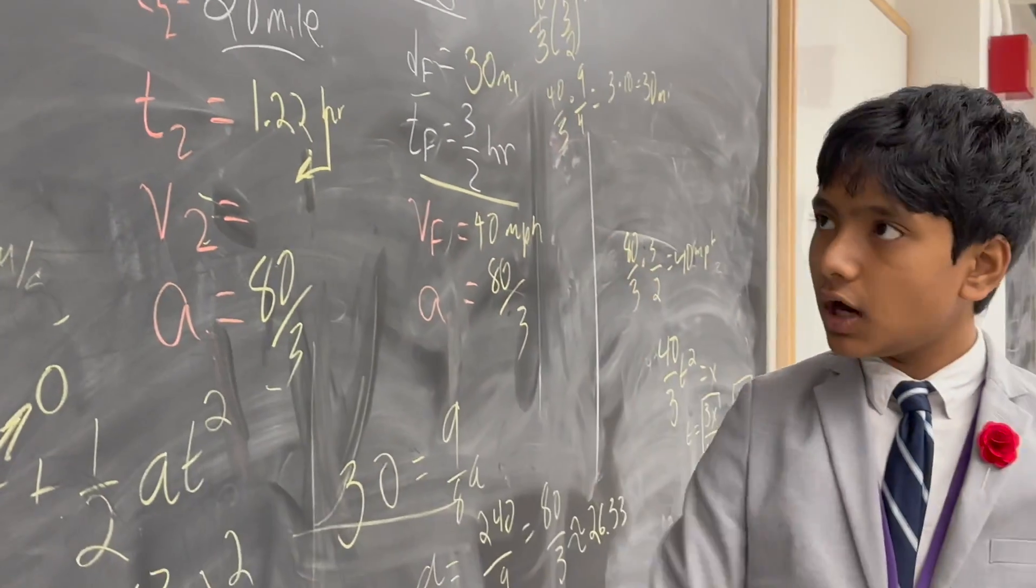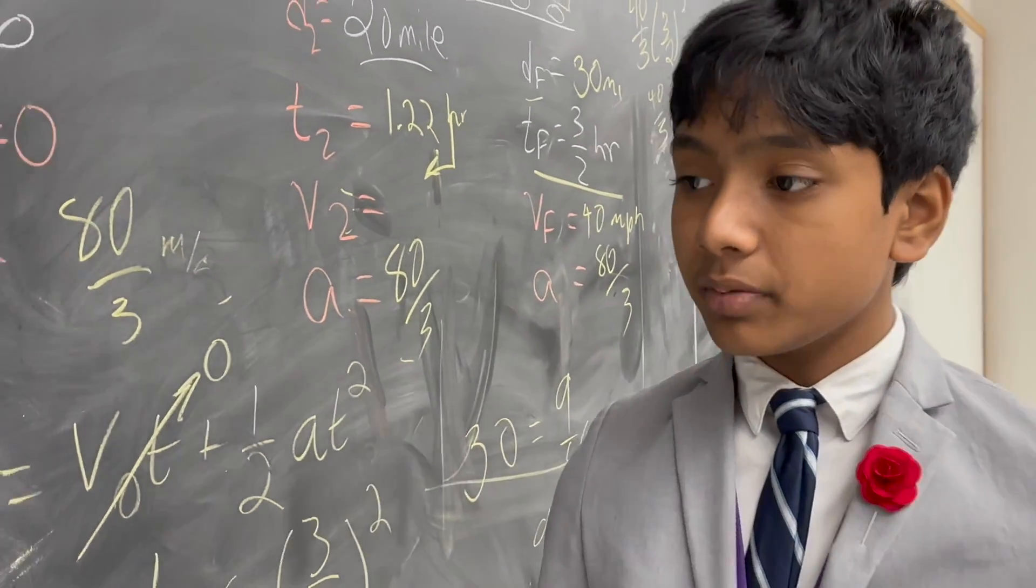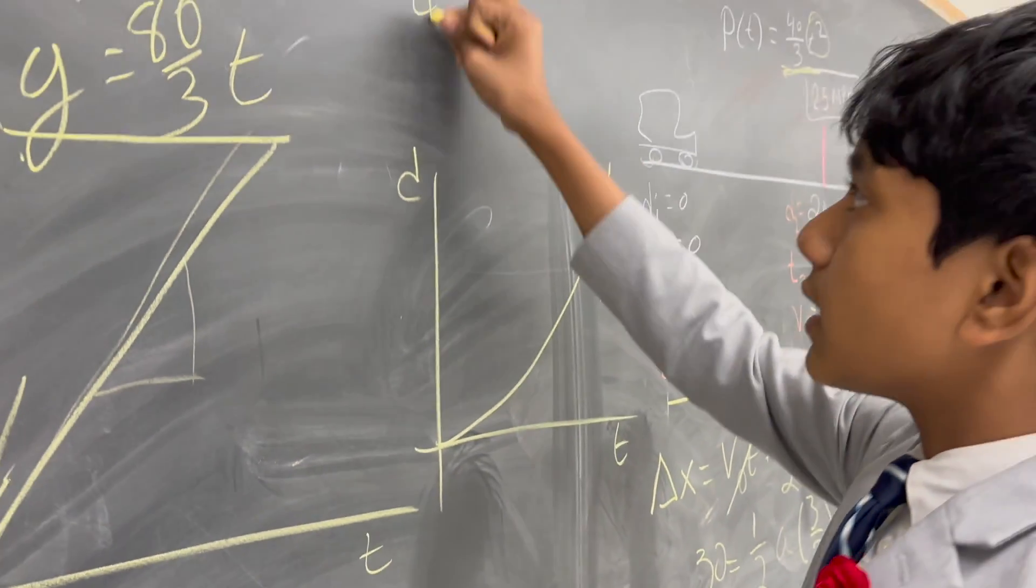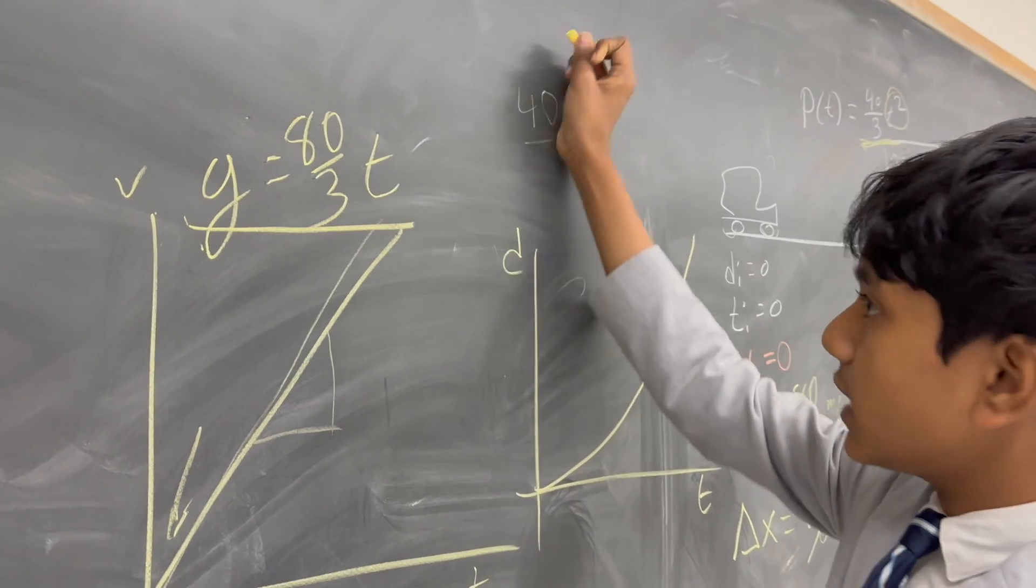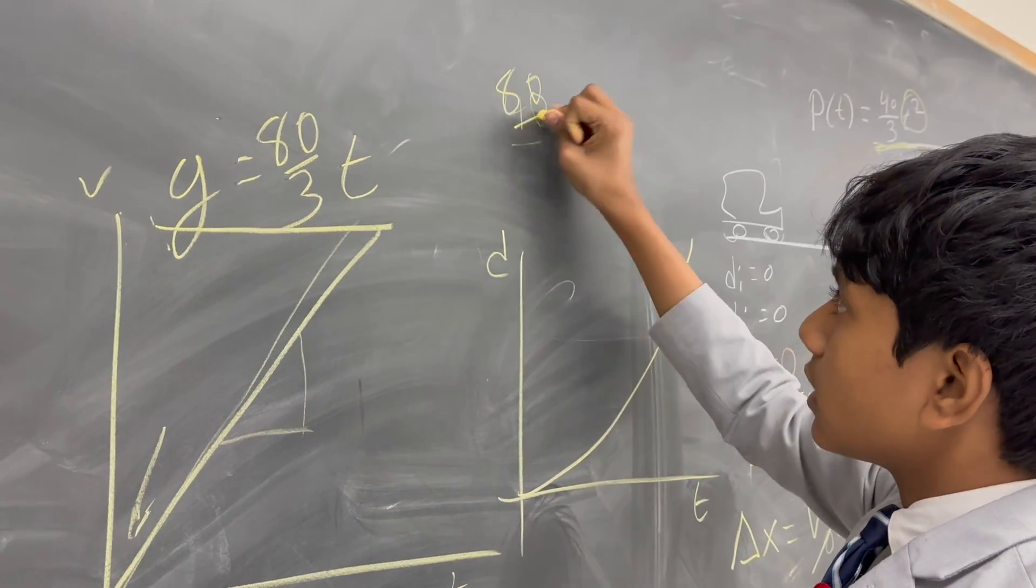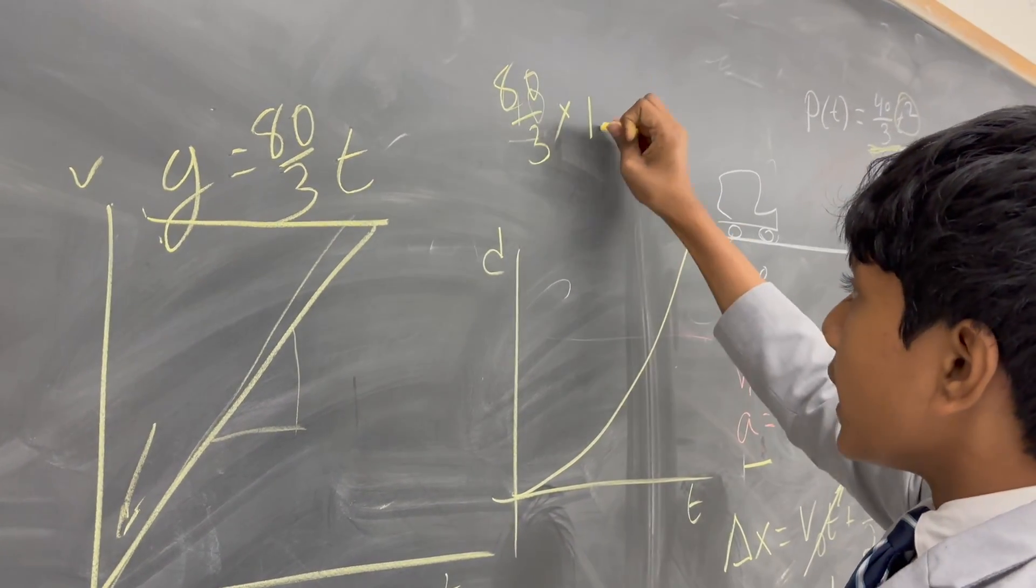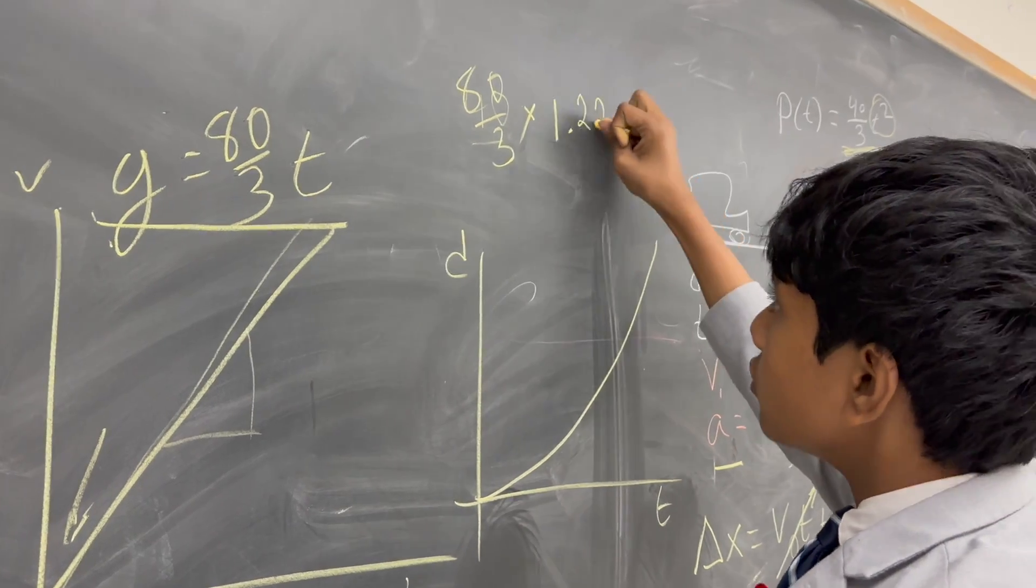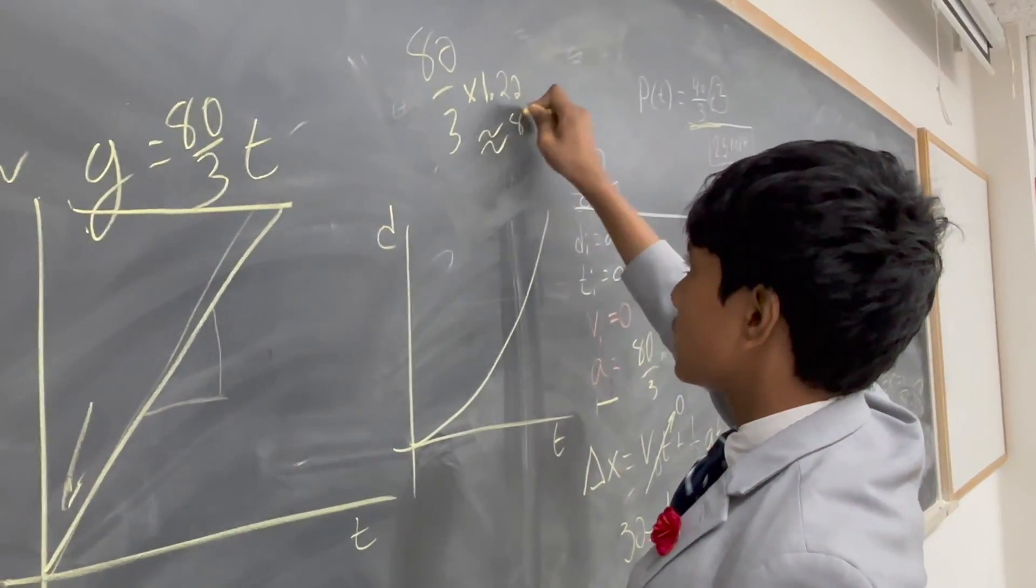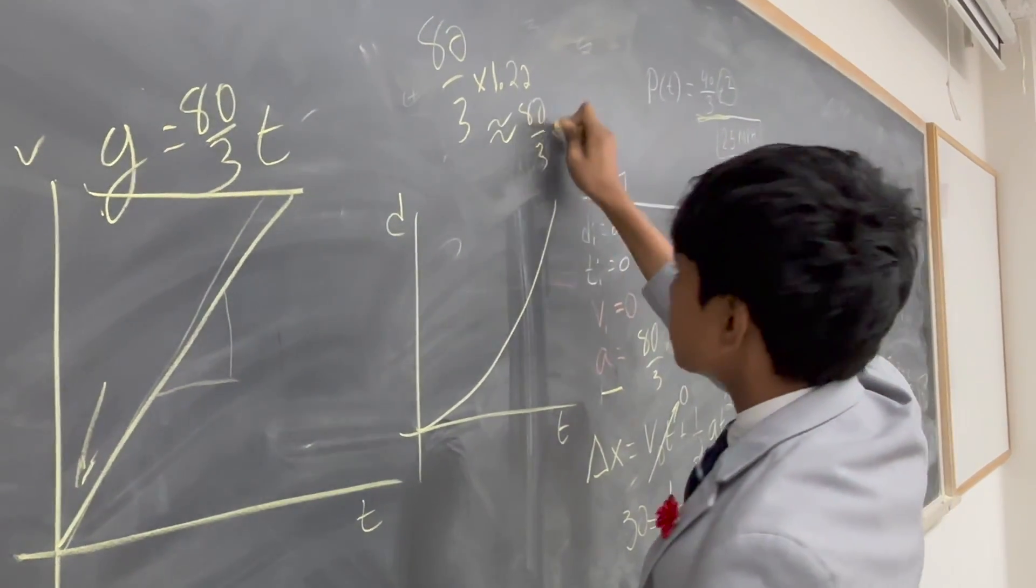So, finally, what's the velocity at this point? The thing we've all been waiting for. Well, it's 80 over 3 times the time, which is just 1.22, right? Well, let's estimate that as 80 over 3 times 1.2 to make it easy on it.